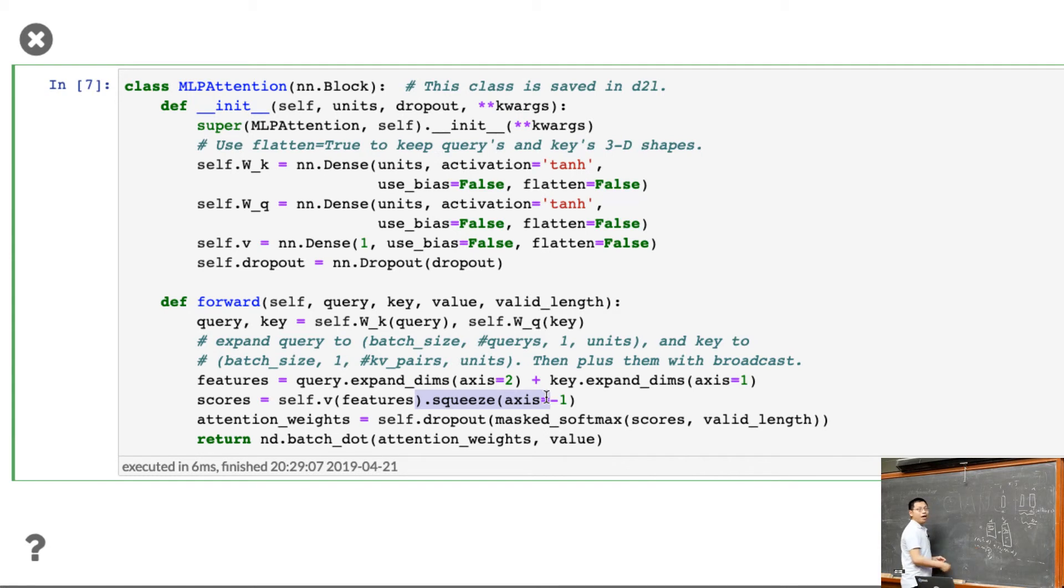Because we apply a vector here, the D will become 1, and then remove this one. You've got n by m, this is a score for all this query and key pairs. Lastly, it's very similar. Put the scores into the softmax, and have a valid length, have a dropout, get attention weight, and apply to the values. So we get all this output. So the only difference is here, we do a projection, and sum them together, and another projection to get scalar scores. So before, we just do a single inner product. So now we have learnable parameters.